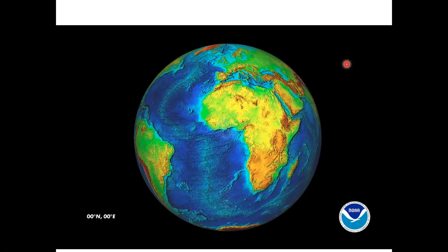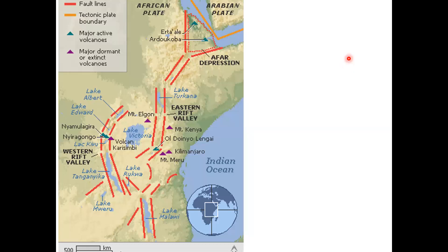Remember, every mid-ocean ridge is a divergent plate boundary. We can see what tensional forces are doing on the adjacent land nearby. What you're seeing here is the Great Rift Valley of Africa — it trends for well over a thousand miles and it's being pulled apart. All these red lines indicate fault lines. Forces are pulling this part one way and the other part the other way, so this is being stretched apart.